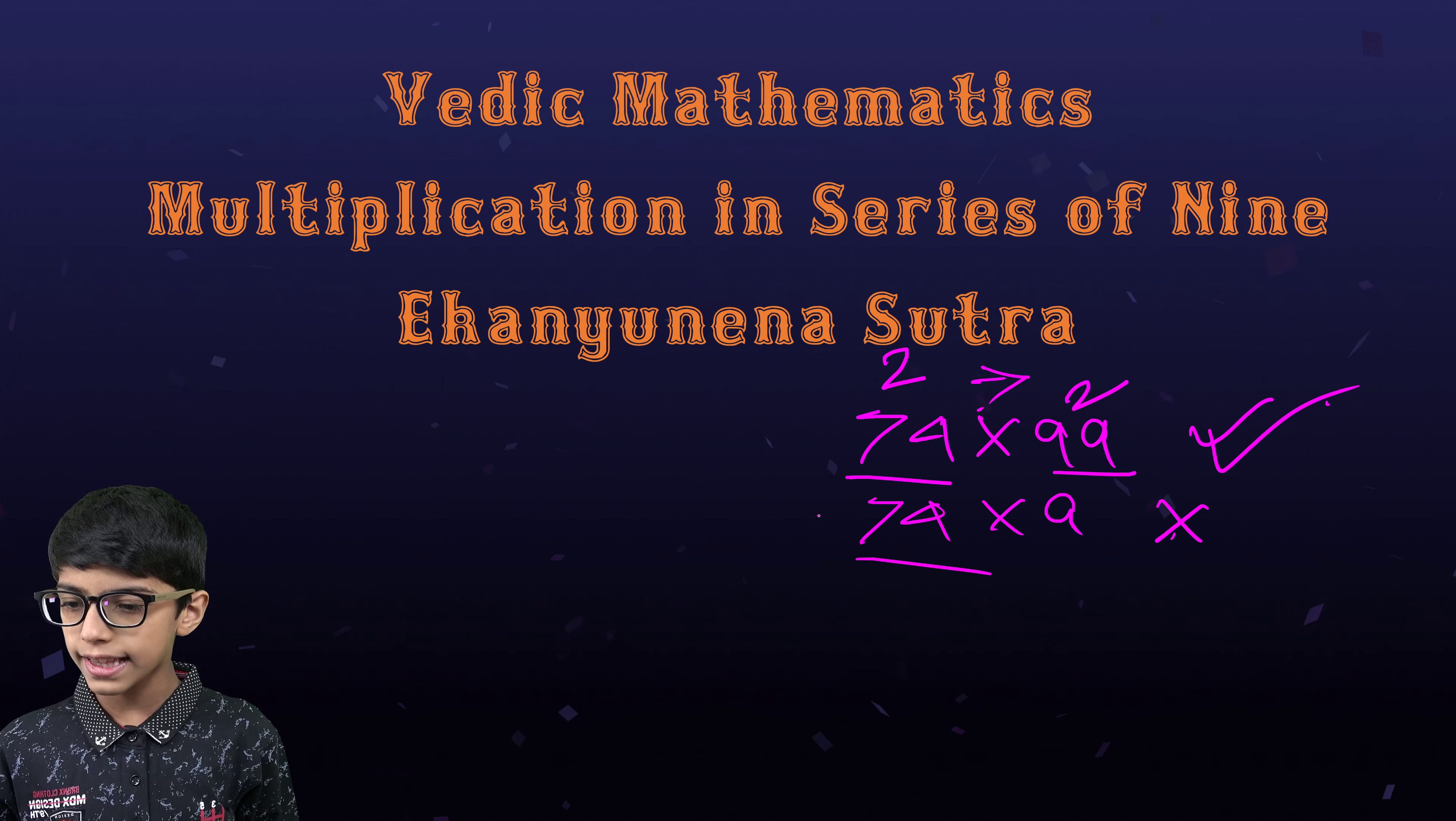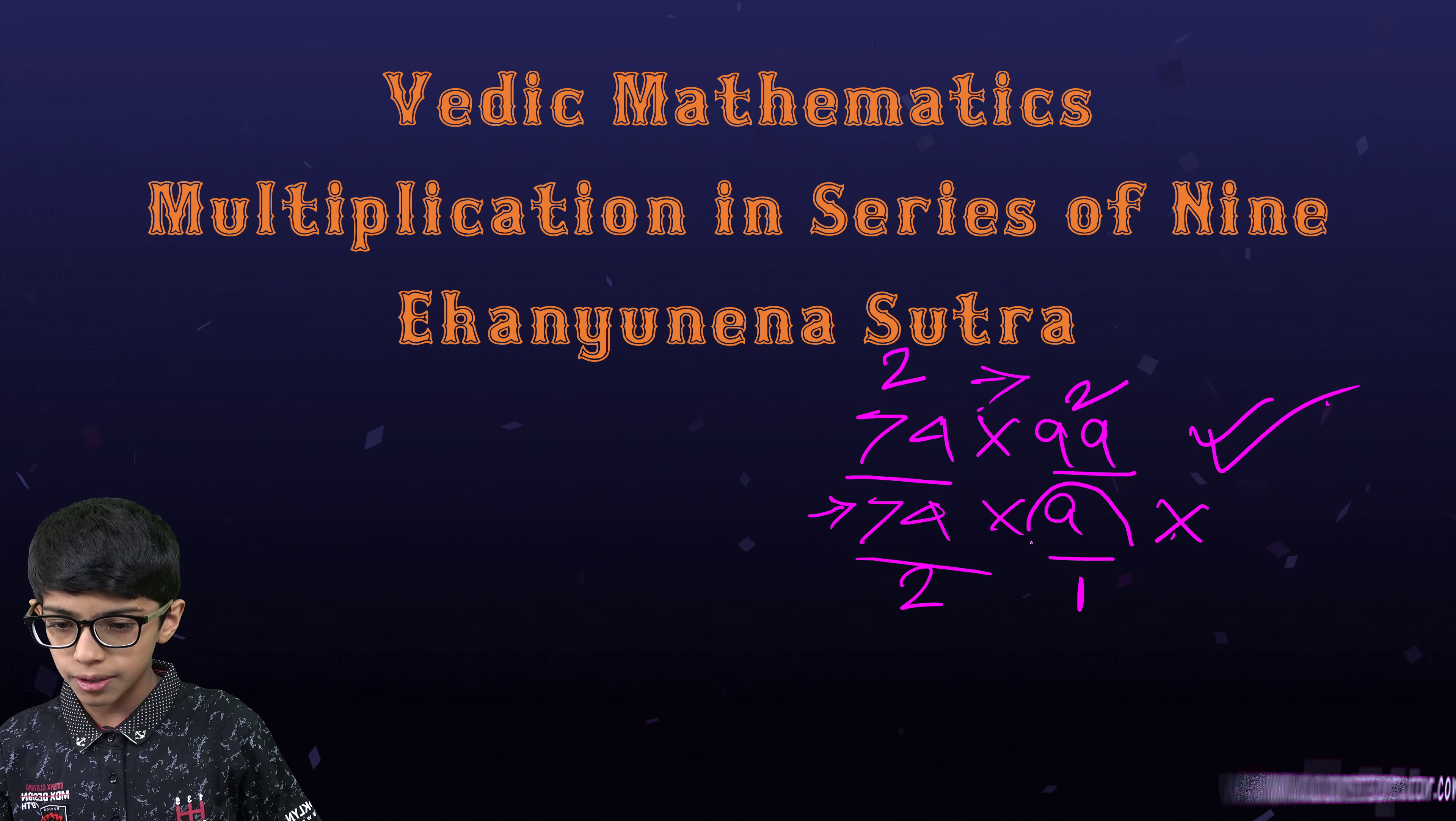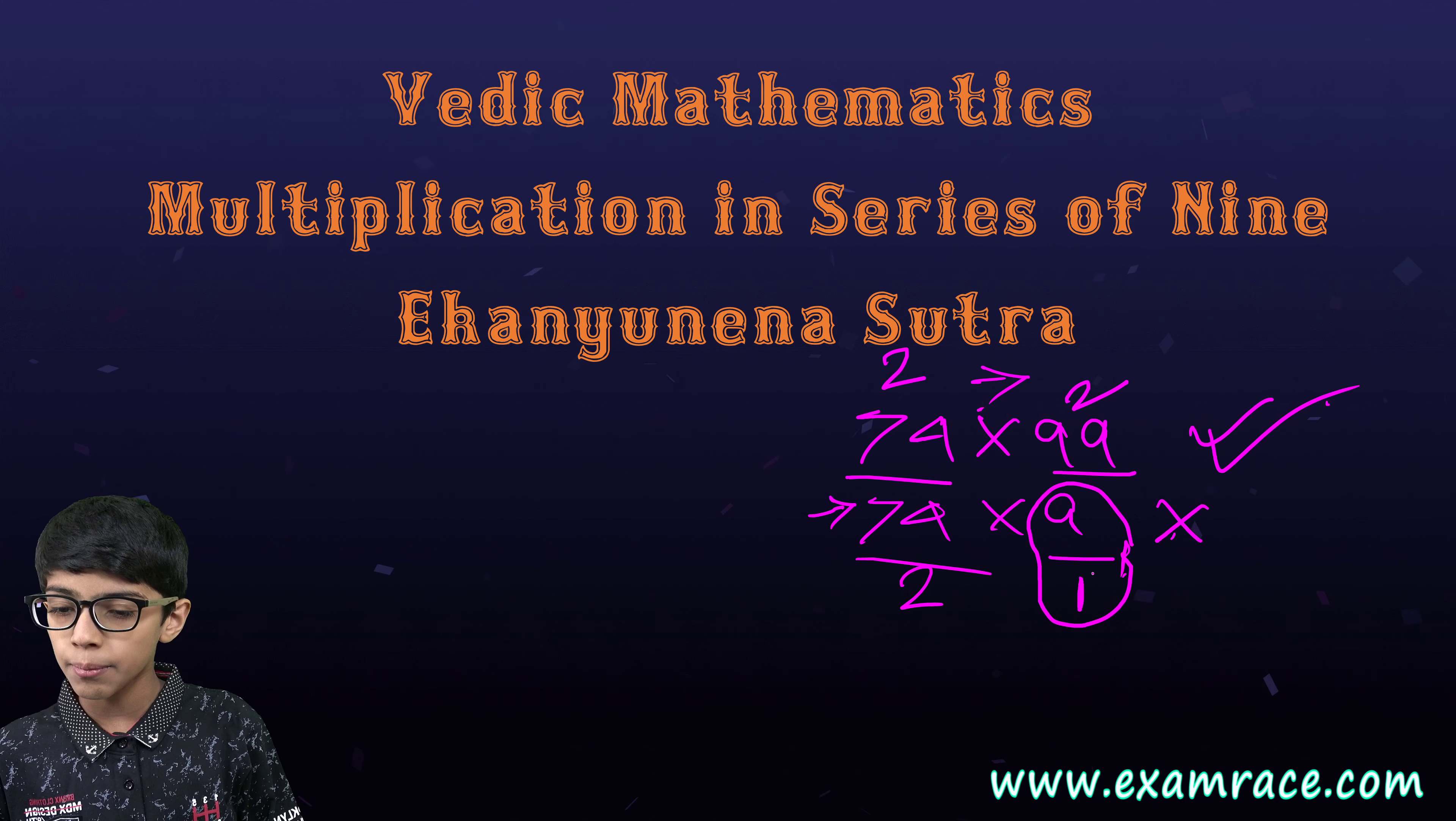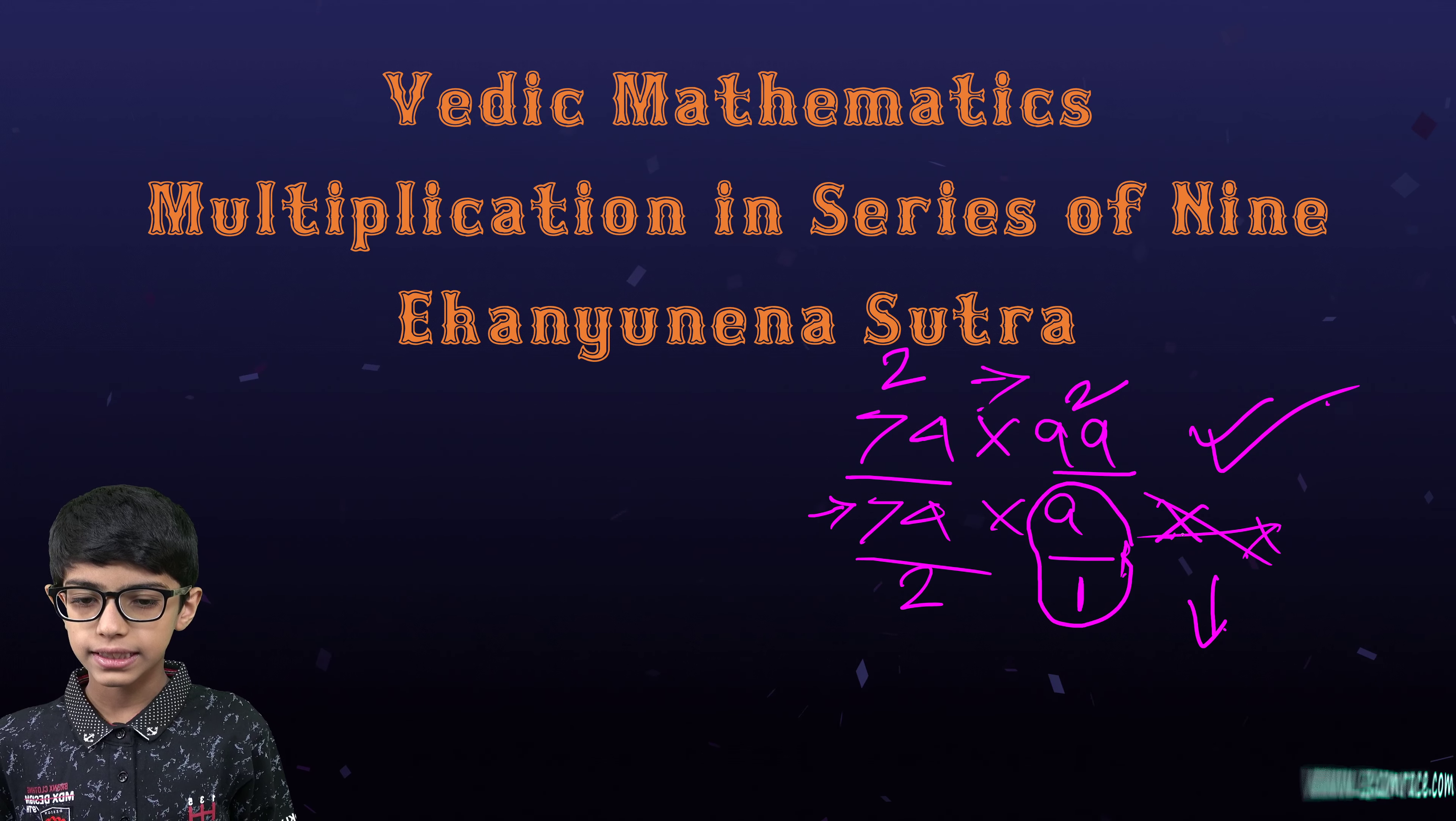But in the second circumstance, 74 has 2 digits and 9 has only 1 digit. Therefore, the number of digits in 9, which is the multiplier, is less. So this cannot be done.